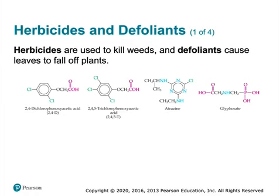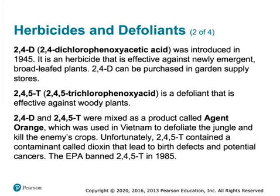Herbicides kill plants — specifically weeds. Defoliants get rid of leaves. Two of them were combined to make something called Agent Orange: 2,4-dichlorophenoxyacetic acid and 2,4,5-trichlorophenoxyacetic acid. This defoliant was used to destroy the jungle and kill crops during the Vietnam War, and it had dioxins in it that led to birth defects affecting both Vietnamese and Americans alike.